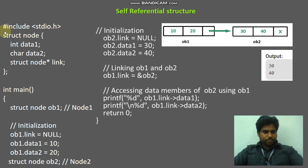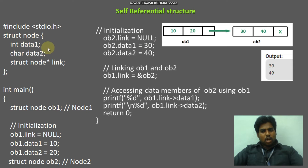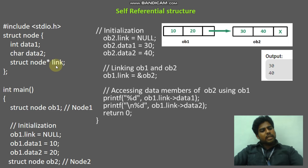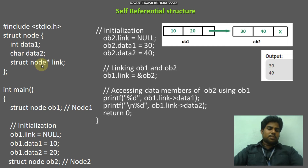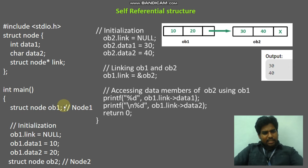Now, see this example. First, I am creating one structure. I am going to create one node. Struct node — here, how many data values are there? Two data values. So, int data1 and char data2. Two data members I am going to construct here. Then, struct node pointer 'link'. What is this self-referential structure? Self-referential structure means it has one pointer which belongs to the same struct node type — struct node link. So this is the self-referential structure. I declared this structure above the main. Inside the main, I am creating the structure variable.